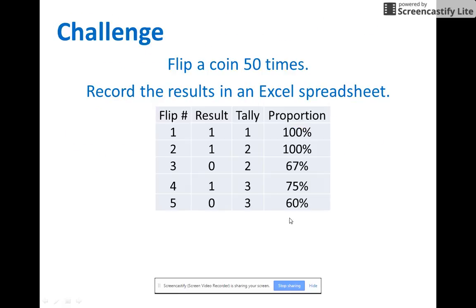So if you want to try this, flip a coin 50 times, record the results in an Excel spreadsheet, you could tally heads as one and tails as zero, and then add them up as they go and see what the proportion is once you get to 50. It'll probably be somewhere between 45% and 55%.